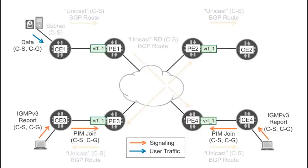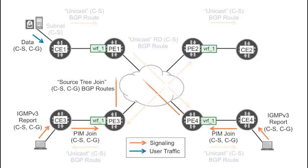Once the PEs are MVPN neighbors in the context of VRF1, PE3 and PE4 can propagate their PIM join state upstream to PE1, the unicast next hop towards the source. PE3 and PE4 achieve that by sending the new BGP routes called source tree joins.